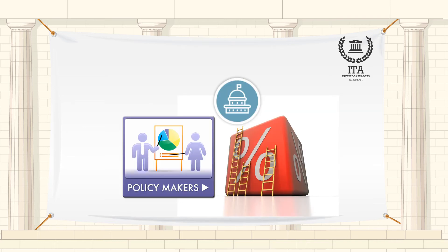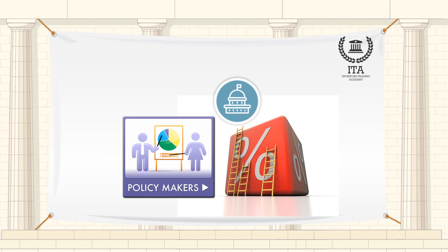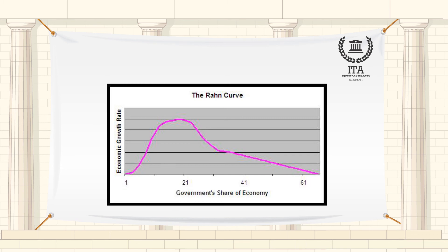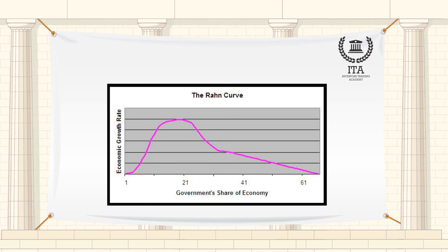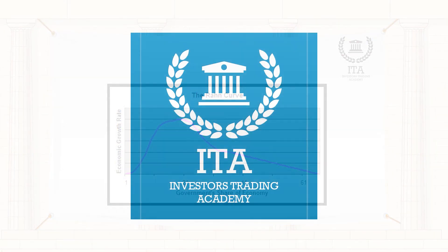Policymakers should strive to set tax rates at the growth-maximizing level. But since a growth-generating tax is about as common as a unicorn, what it really means is that tax rates should be set to produce enough revenue to finance the growth-maximizing level of government, as illustrated by the Raan Curve. For more information, please visit our website.